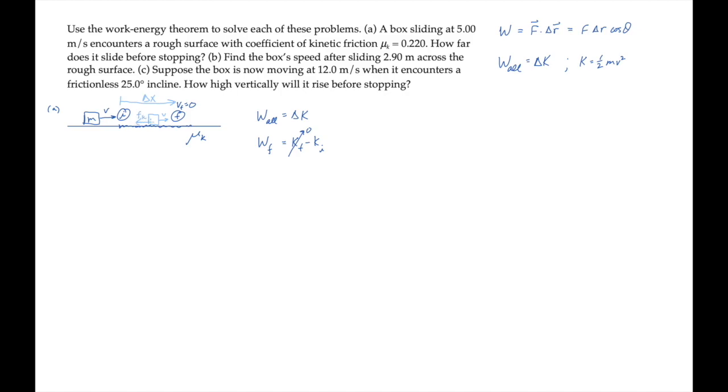This means that the work done by friction will be the magnitude of the kinetic friction force times the magnitude of the displacement before stopping times cosine of the angle between those two. That's cosine of 180 degrees, which is negative 1. And that will equal minus half m v squared.